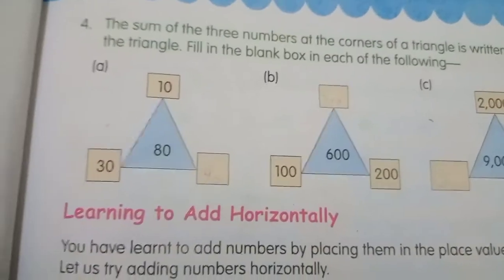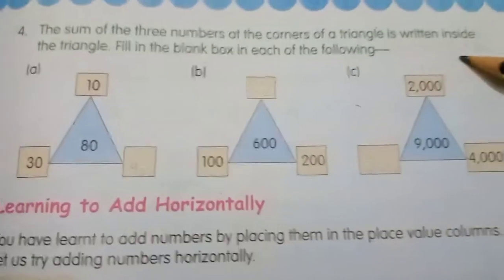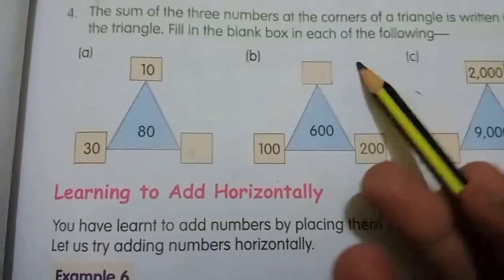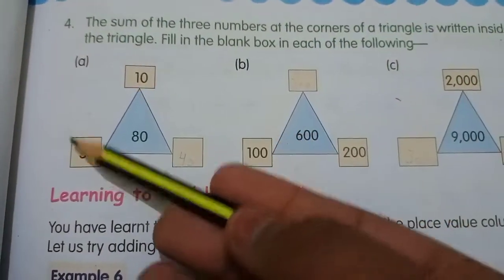Question: the sum of the three numbers at the corners of a triangle is written inside the triangle. Fill in the blank box in each of the following. 10 plus 30, 40.